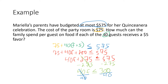300 divided by 40 is 7.5. So f ≤ 7.5. Mariella's family can spend no more than seven dollars and fifty cents on food per guest if they have 40 guests and want to keep the total at or under 575 dollars.